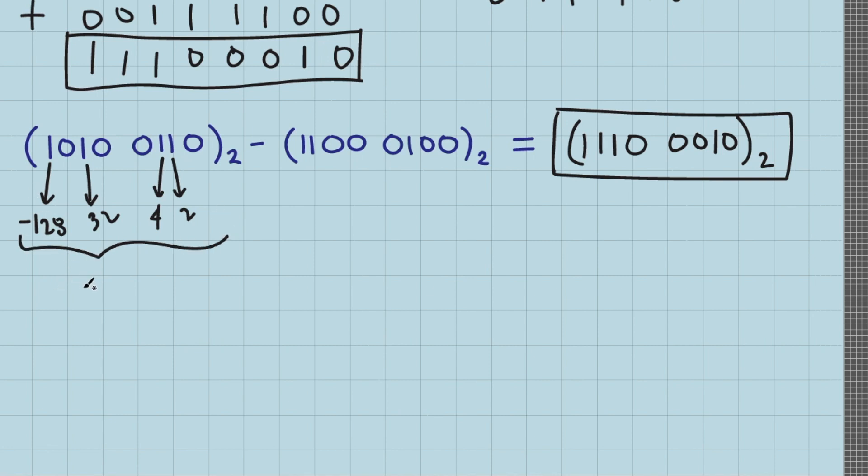About this one, this position has a weight of 4, this one has a weight of 64, and this one is negative 128. If we sum these weights, this equals negative 60.